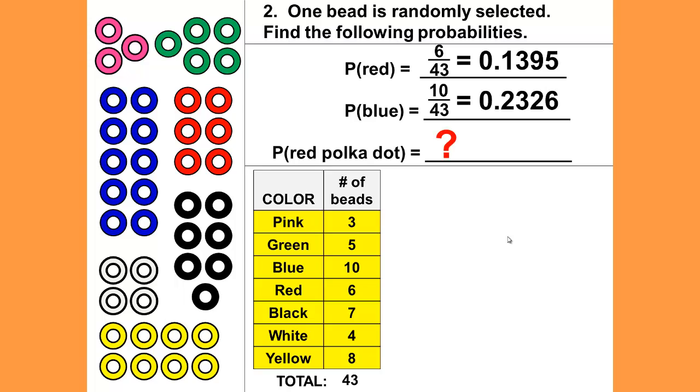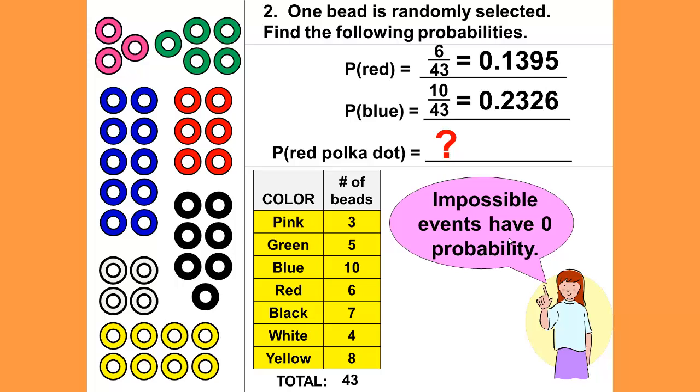The probability of being a red polka dot bead is impossible, and impossible events have a probability of zero.